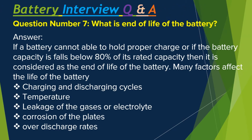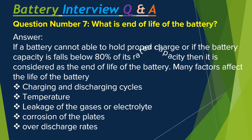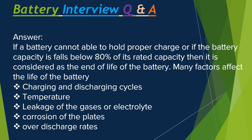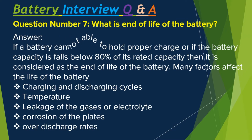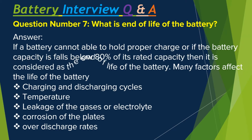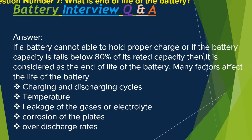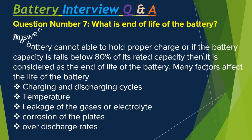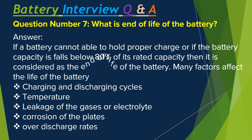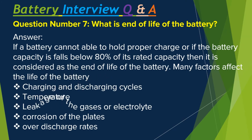Question number seven: What is the end of life of a battery? If a battery cannot hold a proper charge, or if the battery capacity falls below 80 percent of its rated capacity, then it is considered as the end of life of the battery. Many factors affect the life of a battery: number one, charging and discharging cycles; number two, temperature; number three, leakage of gases or electrolyte; number four, corrosion of the plates; number five, over-discharge rate.